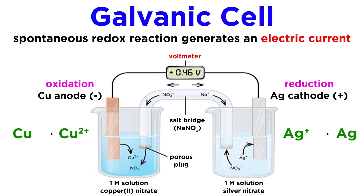When everything is connected, the cell will have a cell potential. This is the energy available per unit charge from the redox reaction, measured in volts, which are joules per coulomb. This can be measured using a voltmeter, which works by drawing current through a known resistance, and these are typically digital.